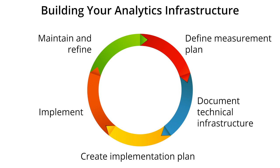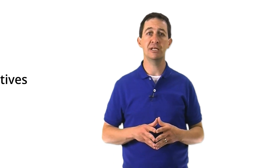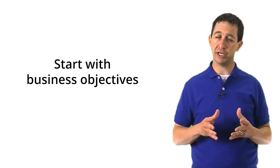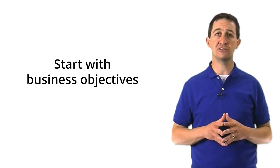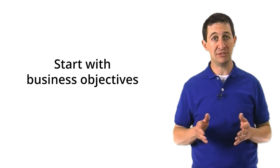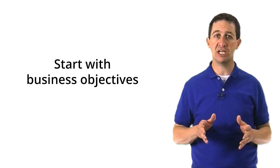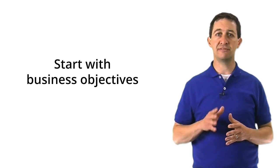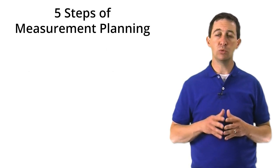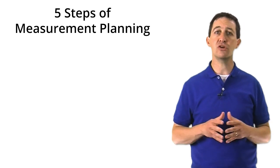Because the digital world changes so fast, your measurement plan needs to be maintained and refined so that your data can evolve with your business. Therefore, the measurement planning process should be cyclical, if not continuous. We're going to spend most of this lesson talking about the measurement plan, using a simple model developed by Avinash Kaushik. This model can be used to design a digital measurement plan for any size of business, large or small. You will go through a series of five steps in order to define your measurement plan. We'll go over each of the five steps in this lesson.